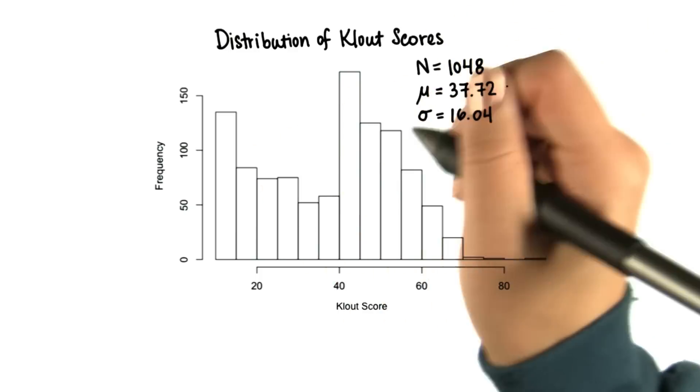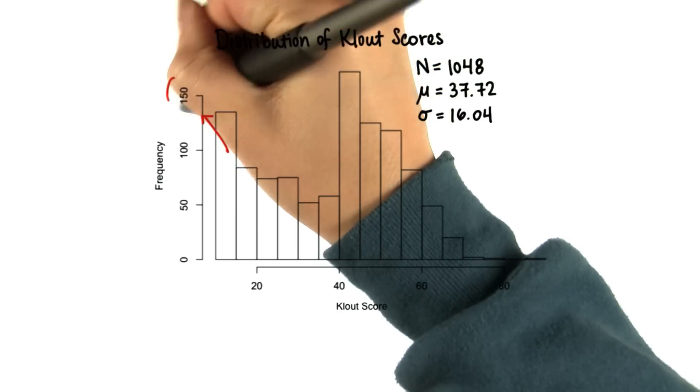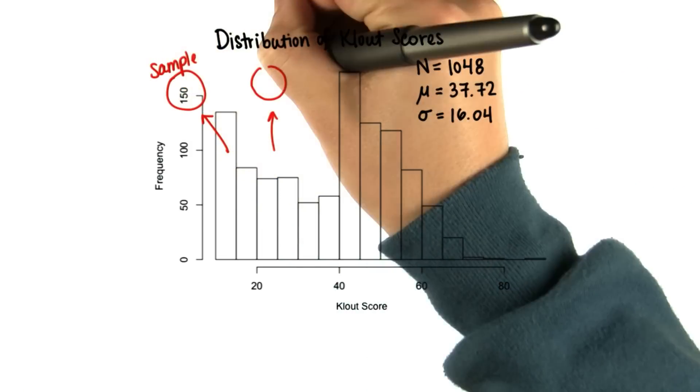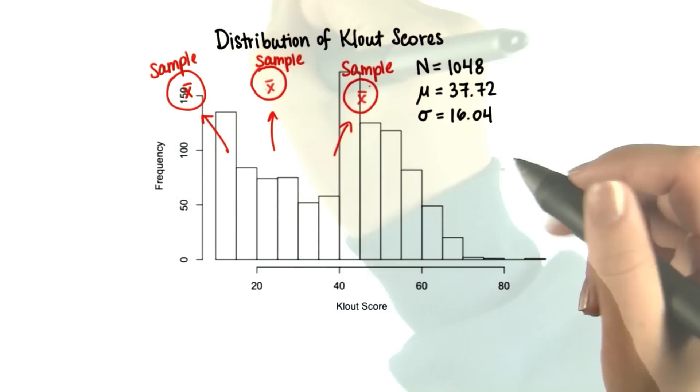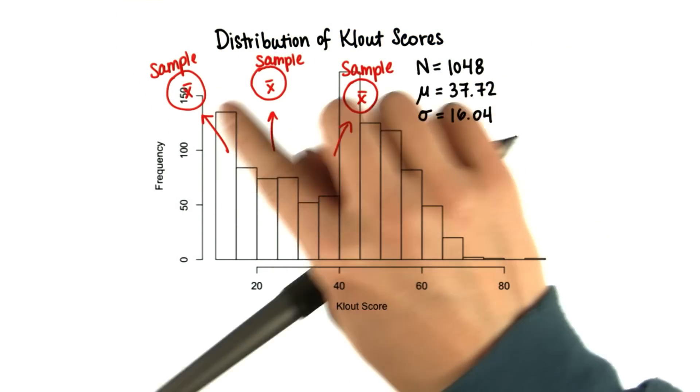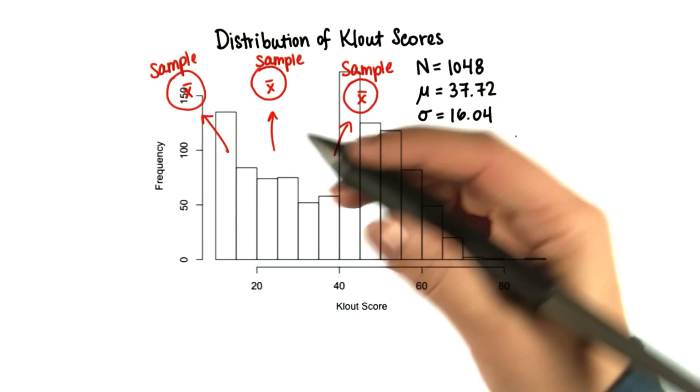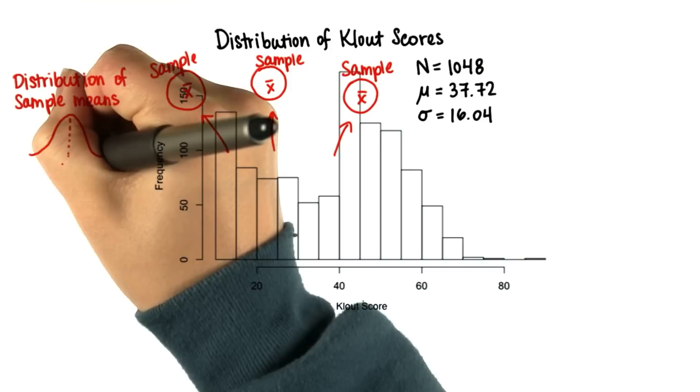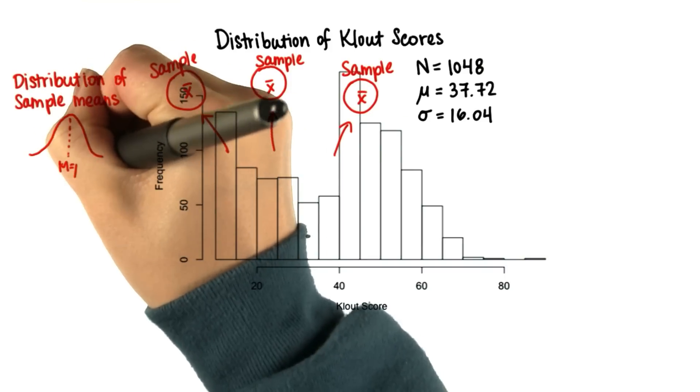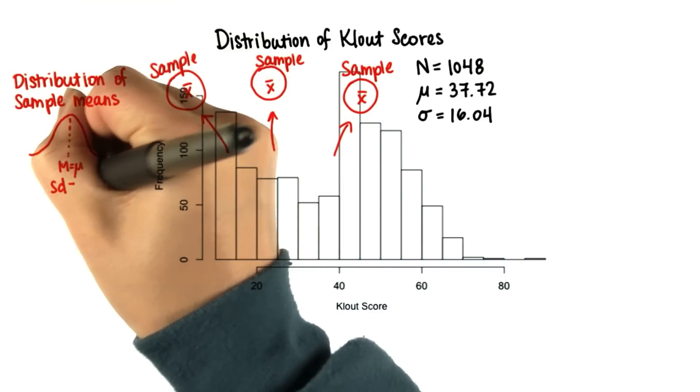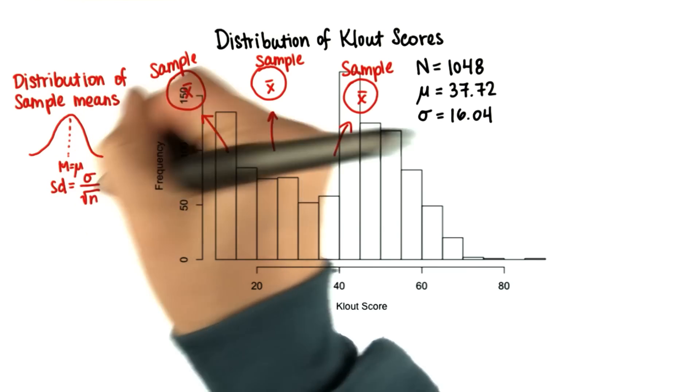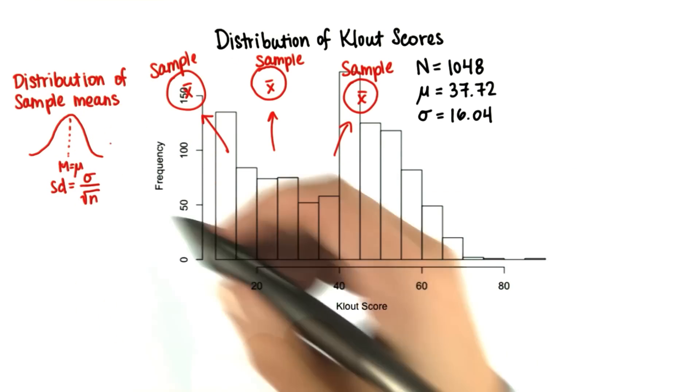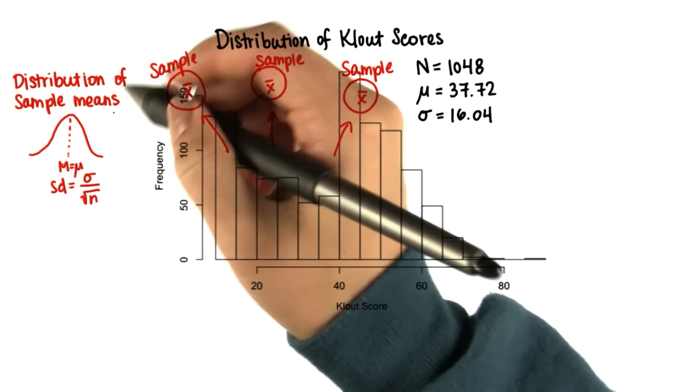Then we know from the central limit theorem that if we took all possible samples, all of the same size, and then found the mean of each sample, and then graphed the distribution of those sample means, we would get a normal curve with a mean equal to the population mean, and a standard deviation equal to the population standard deviation divided by the square root of the sample size. Remember that this is called the sampling distribution.